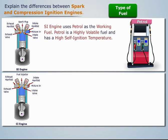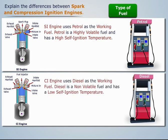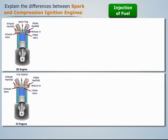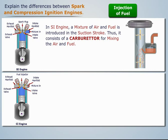The spark ignition engine uses petrol as the working fuel. Petrol is a highly volatile fuel and has a high self-ignition temperature. Whereas, the compression ignition engine uses diesel as the working fuel. Diesel is a non-volatile fuel and has a low self-ignition temperature.